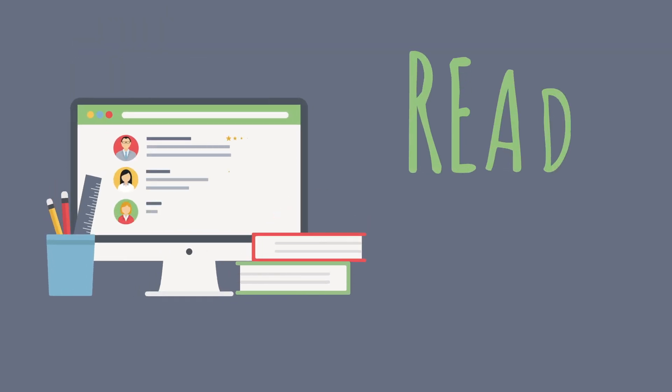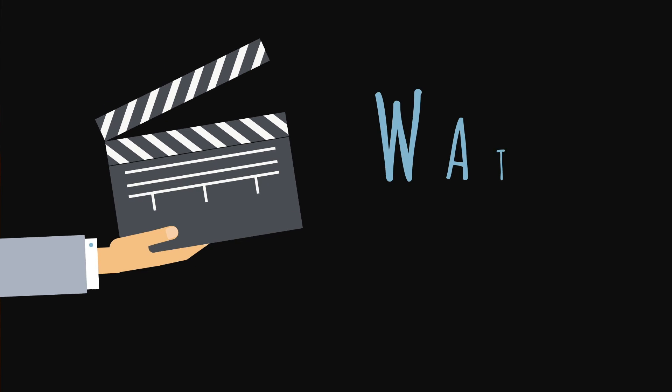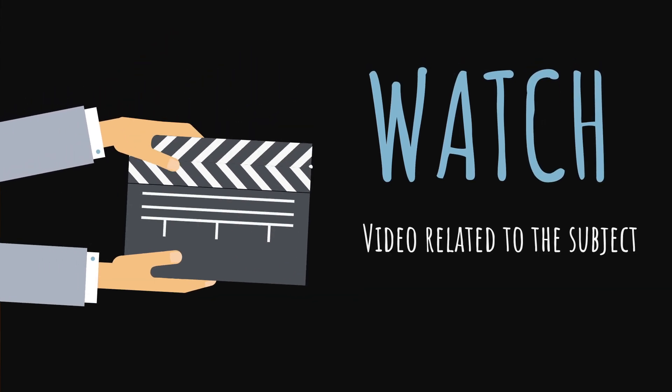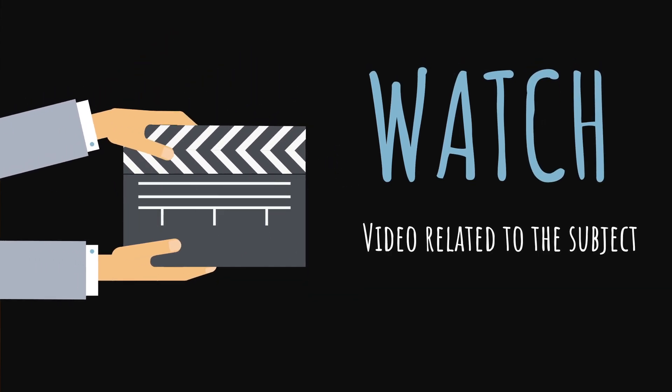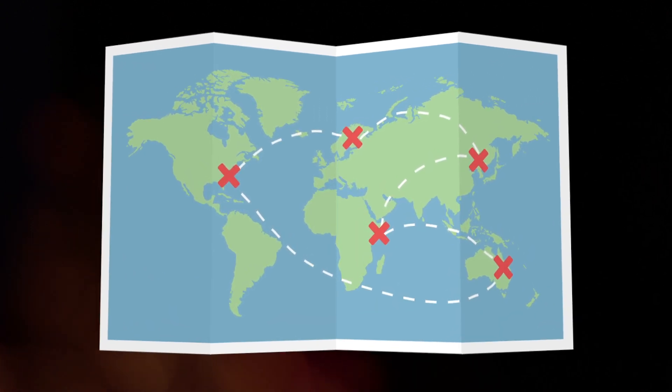In history we've got this thing called read, watch, do. The teacher makes us read around the subject — books linked to the subject, so for example right now we're doing Weimar and Nazi Germany. Then we watch something related to the subject, and for 'do' we visit a place, for example in Germany.